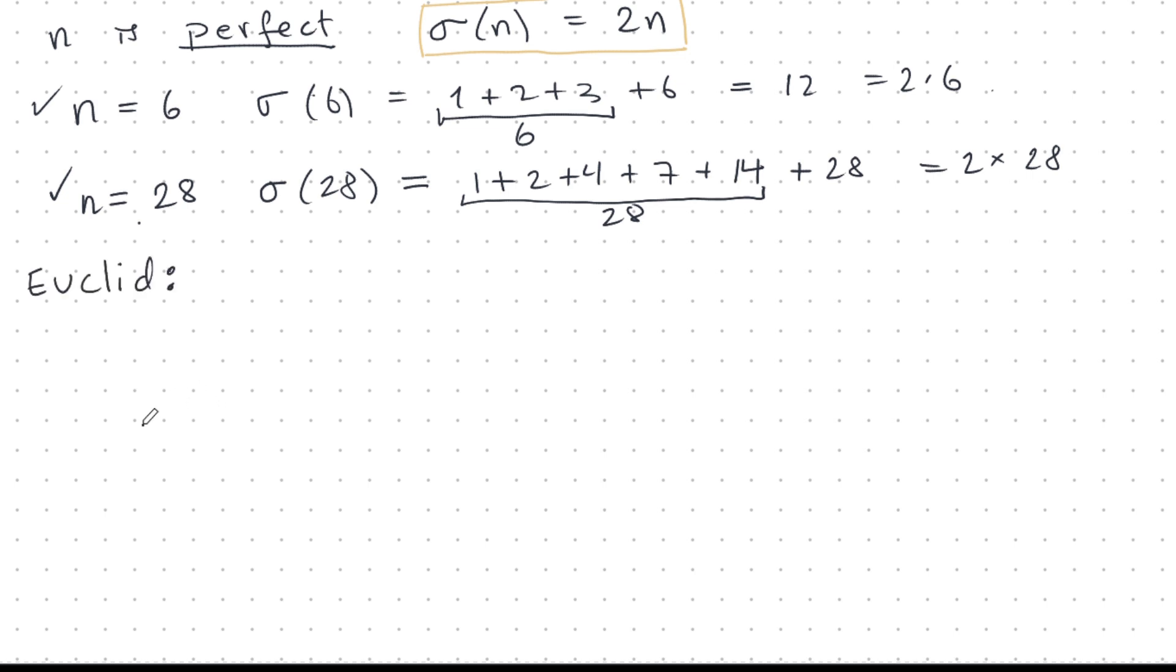The first fellow who proved something really interesting about them is Euclid, who proved the following. If Mp is a Mersenne prime, then 2 power p minus 1 times Mp is a perfect number. And you recall from last video, Mp is 2 power p minus 1.